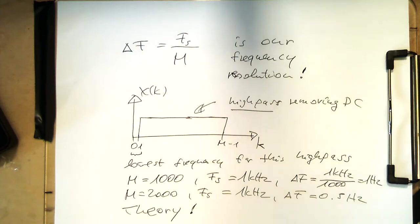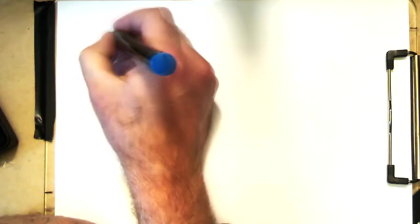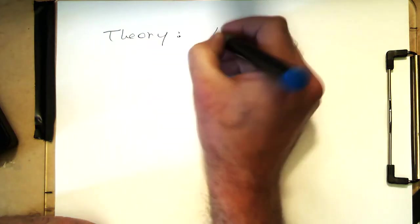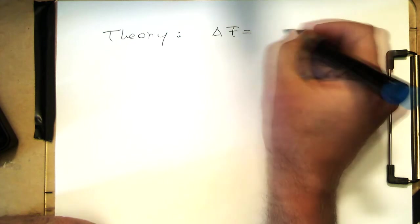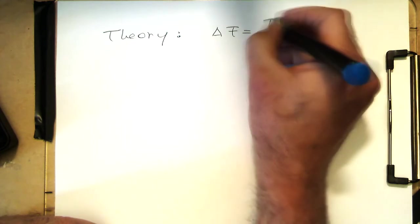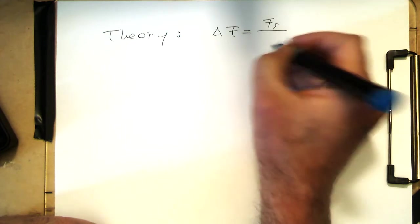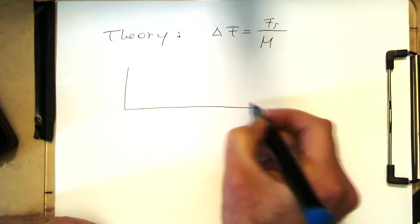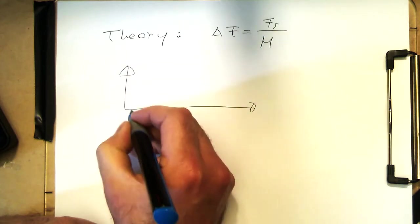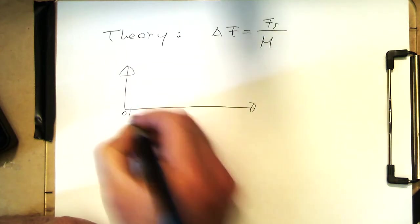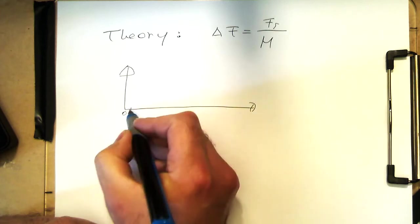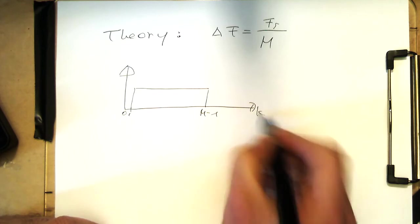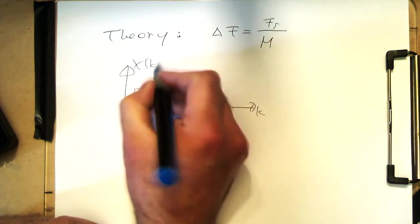So how is that practically? So delta f is fs divided by m. Let's draw again here our high pass filter with our 0 and 1. So this goes to m minus 1, k x of k.